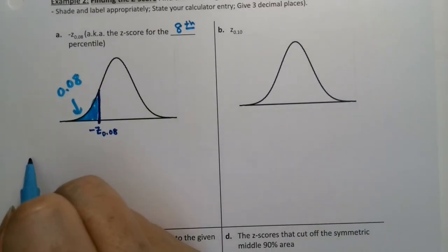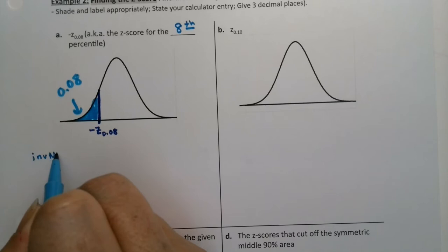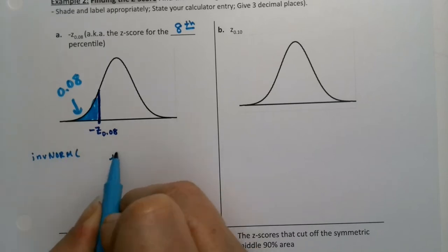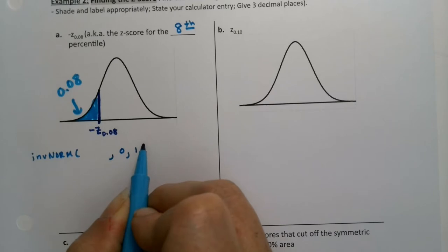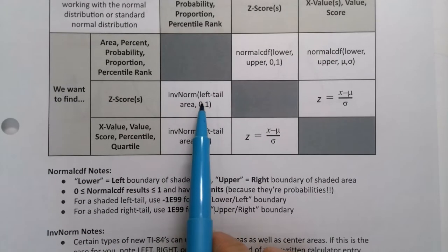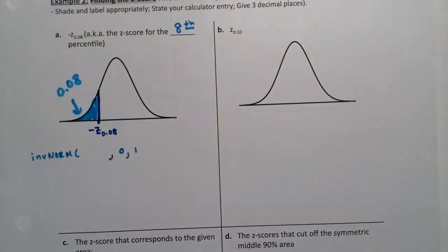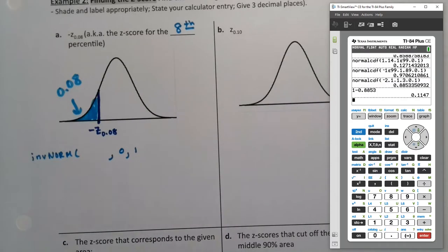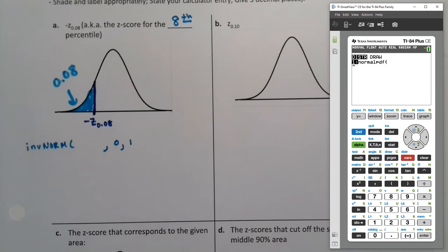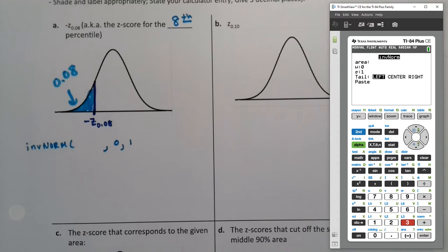In the calculator, we use inverse norm. It takes the left tail area, then 0 and 1. A note about calculators: if you're thinking StatCrunch will be easier, the answer is yes. If you're using StatCrunch, skip ahead past this to the StatCrunch portion. So the area is 0.08, the mean is 0, the standard deviation is 1.